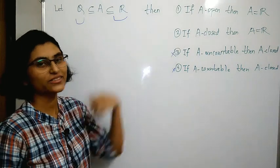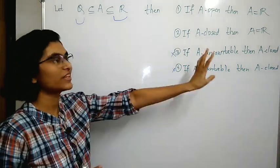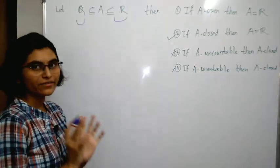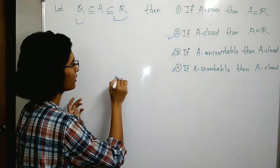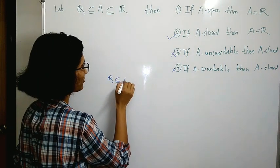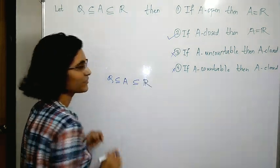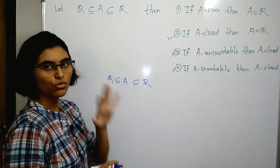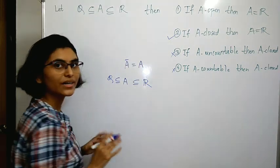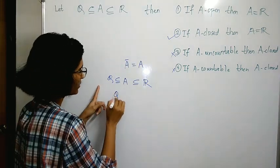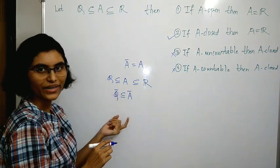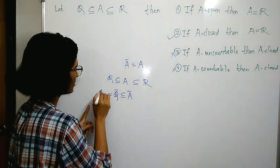Now looking at the second option — if A is closed then A equals ℝ — this is true. A is closed means A closure equals A. Since Q is a subset of A, we have Q closure is a subset of A closure. But Q closure equals ℝ, and A closure equals A because A is closed.